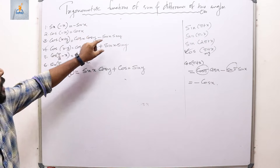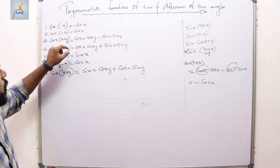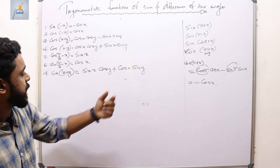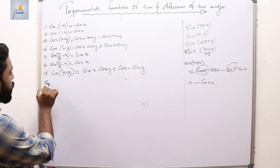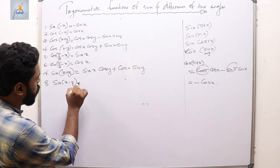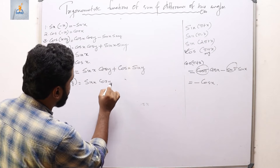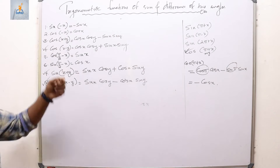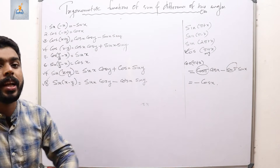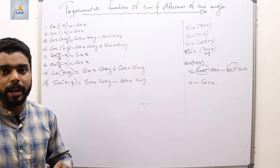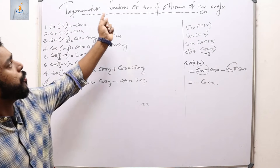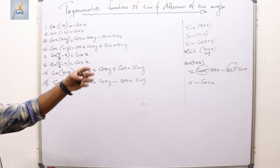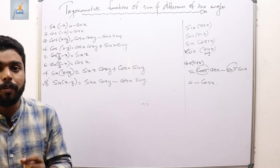The four most important trigonometric identities to always remember are: cos(x+y) = cos x·cos y − sin x·sin y; cos(x−y) = cos x·cos y + sin x·sin y; sin(x+y) = sin x·cos y + cos x·sin y; and sin(x−y) = sin x·cos y − cos x·sin y. Never forget these four.